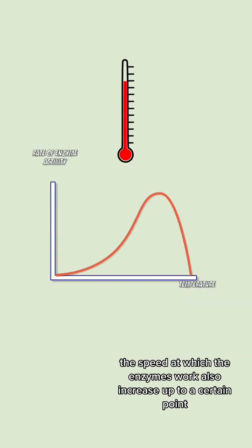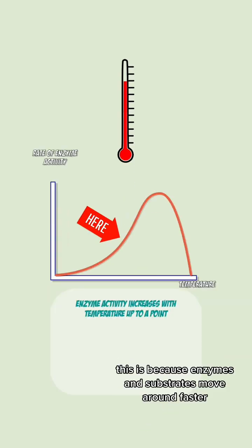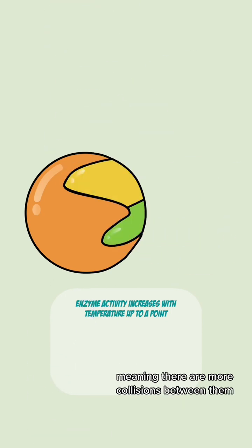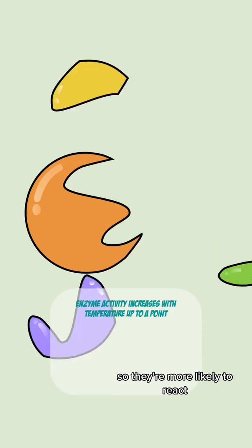As temperature increases the speed at which the enzymes work also increases up to a certain point. This is because enzymes and substrates move around faster meaning there are more collisions between them so they're more likely to react.